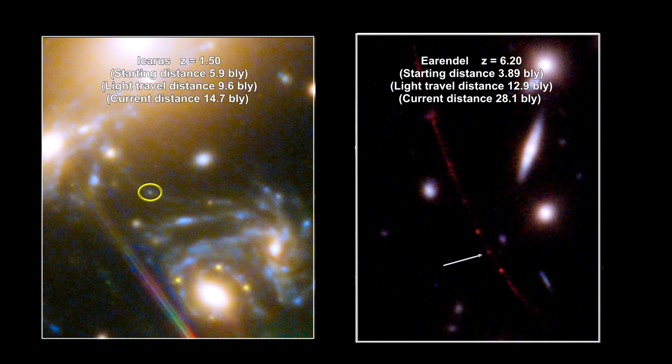It's interesting to note that these views can be transient. Icarus is no longer visible. But Arendelle has been stable and studied for over three and a half years.